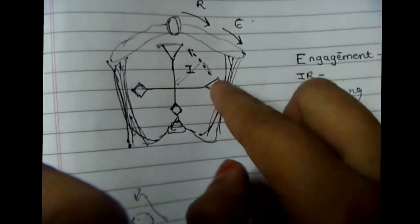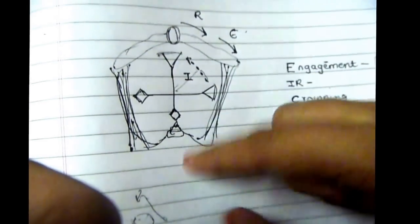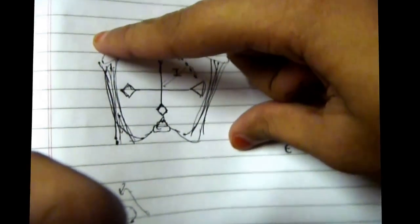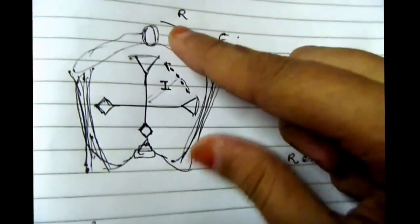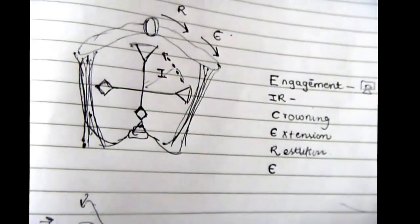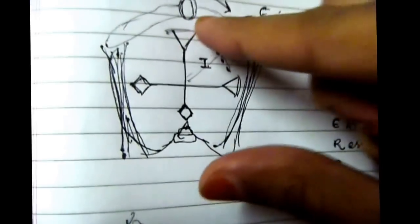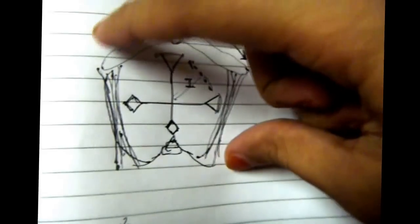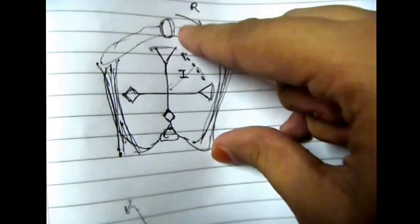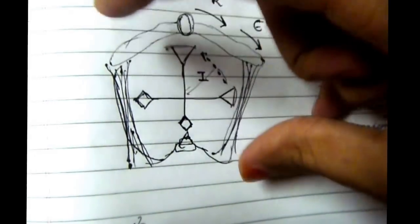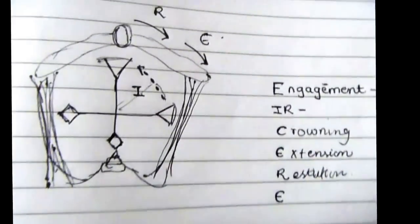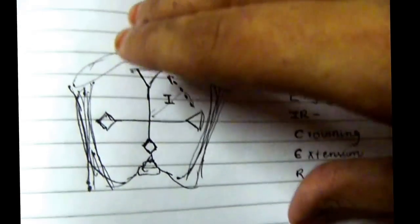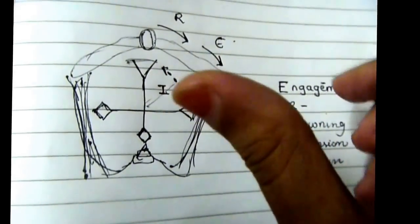The baby's head had undergone a one-eighth circle of torsion. The shoulders are now in the oblique diameter and have to come back behind the pubic arch to deliver. So you rotate back one-eighth of a circle from the oblique diameter to the anterior-posterior diameter. When doing this on a dummy pelvis, make sure the anterior shoulder comes behind the pubic arch.